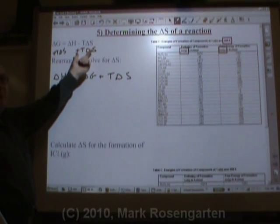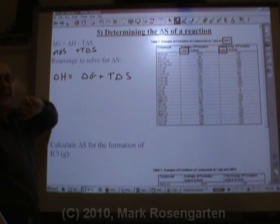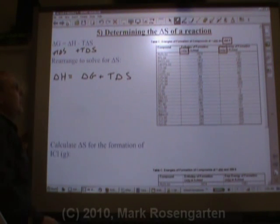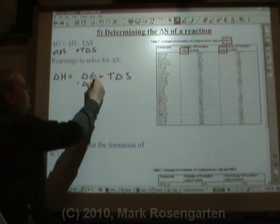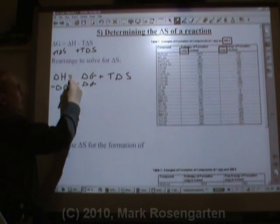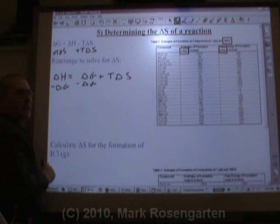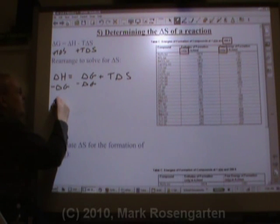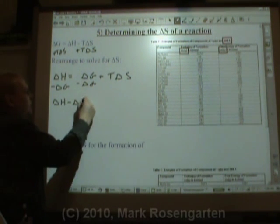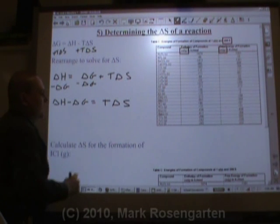I added T delta S to both sides to get rid of that minus sign. Then I'm going to subtract delta G from both sides to leave T delta S. So delta H minus delta G equals T delta S.